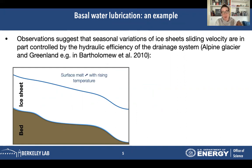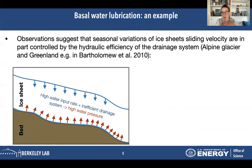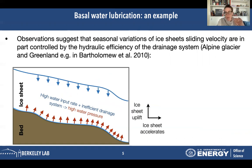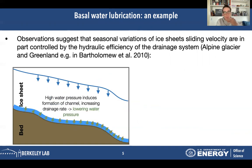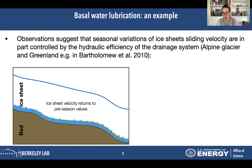What this does is effectively raise the water pressure. The ice sheet is lifted and accelerated. This continues throughout the summer. When a sufficient amount of water has percolated and reached the base, the structure of the water at the base starts to change — instead of being a sheet, it starts forming canals and channels. That effect effectively lowers the water pressure and enables the ice sheet velocity to return to pre-season values. We actually see this happening every year.